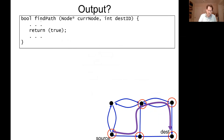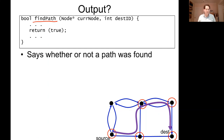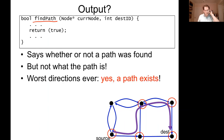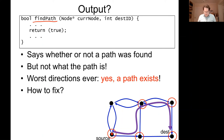What's the output of the find_path routine so far? It's a bool — it tells you whether or not a path was found, but does not tell you what the path is. So the worst directions ever: 'Yes, a path exists from U of T campus to Bedford and Bloor.' We need to do better. How can we actually return the path?